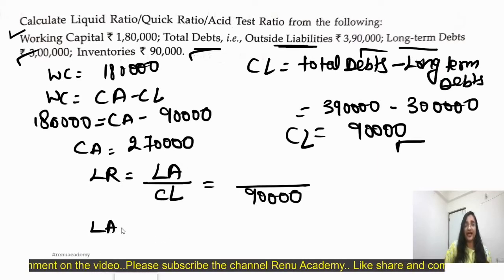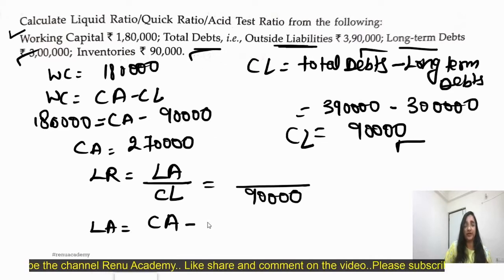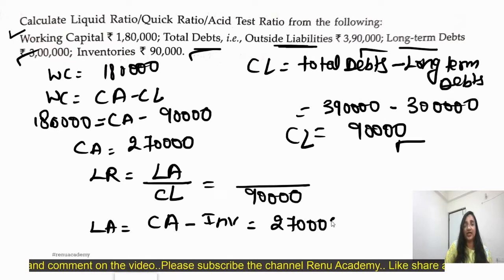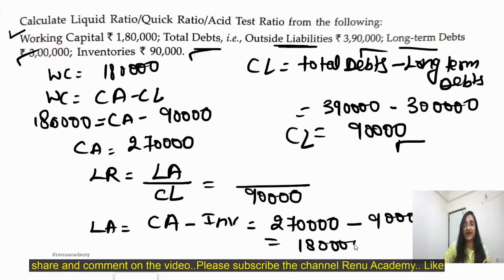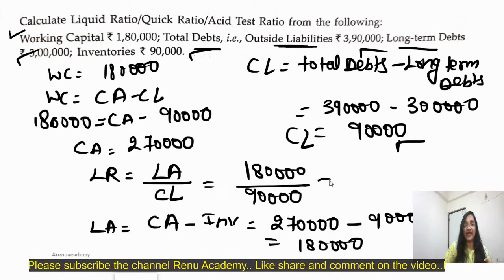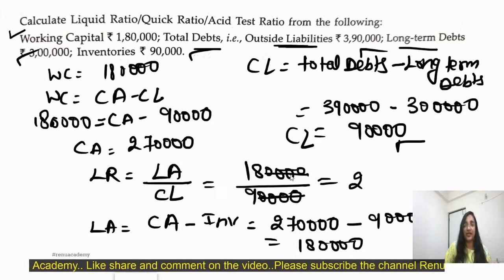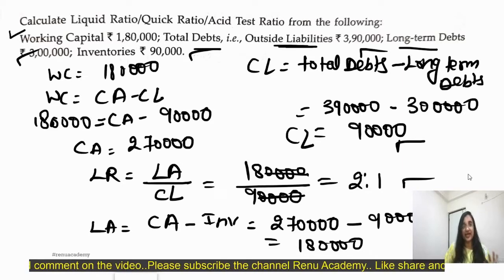We don't know the liquid asset directly. The formula for liquid asset is: current asset minus inventory. Current assets are 2,70,000 and inventories are 90,000. So liquid asset equals 2,70,000 minus 90,000, which gives 1,80,000. When you solve this: 1,80,000 divided by 90,000 equals 2:1. That is the answer. This is a basic question.